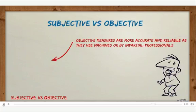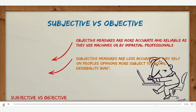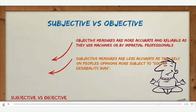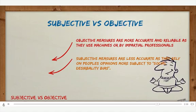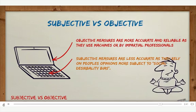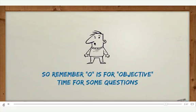So, subjective or objective — which one's better? They're good for different things. Objective measures are generally more accurate and reliable as they use machines or impartial people, whereas subjective measures are less accurate as they rely on people's opinions and are more subject to social desirability bias. Remember, O is for objective. Now it's time to do some questions.